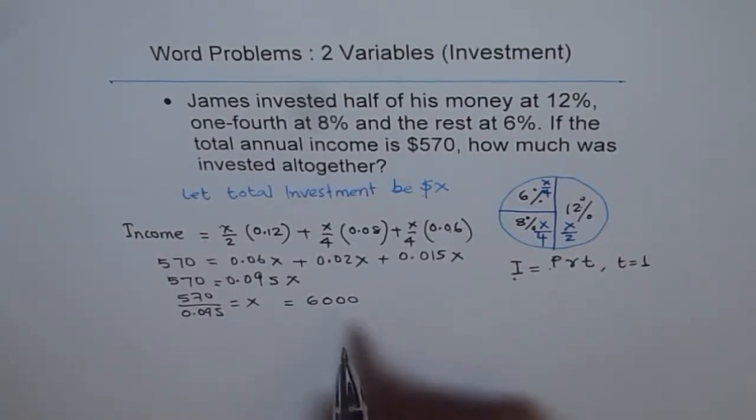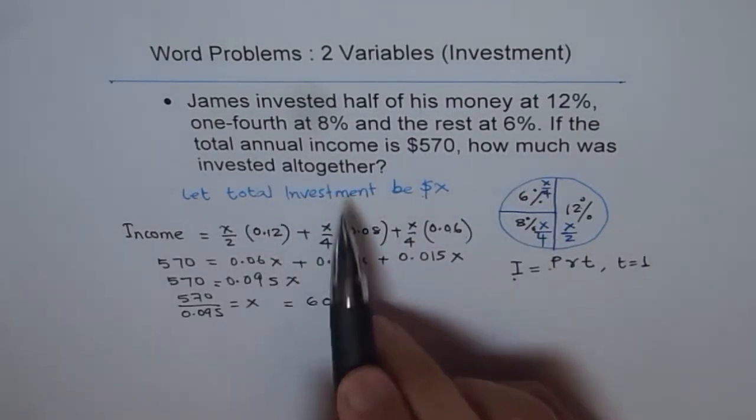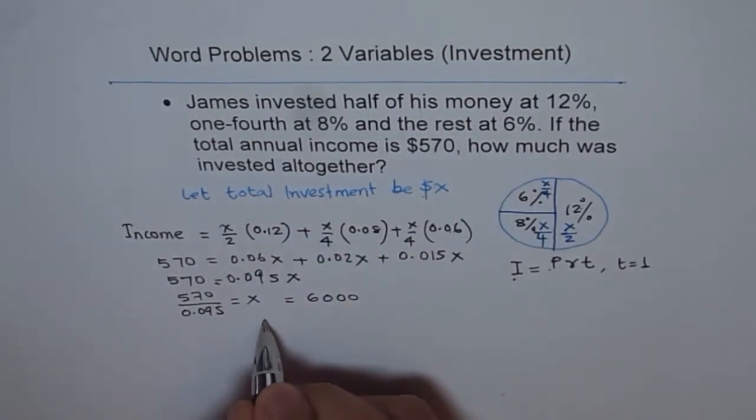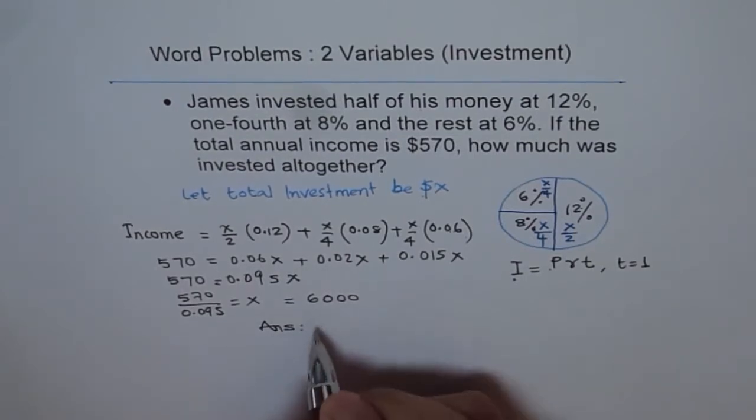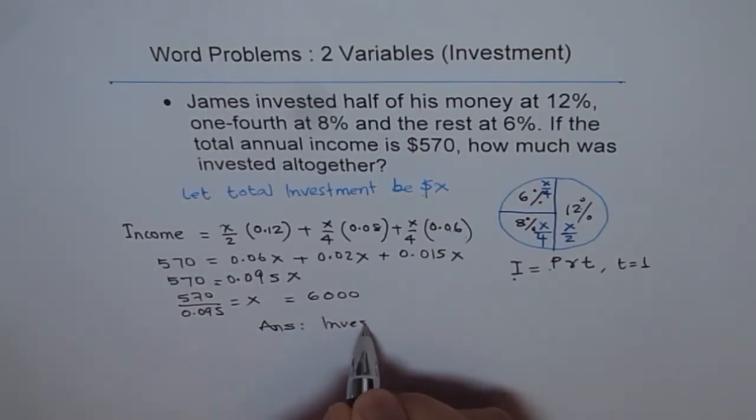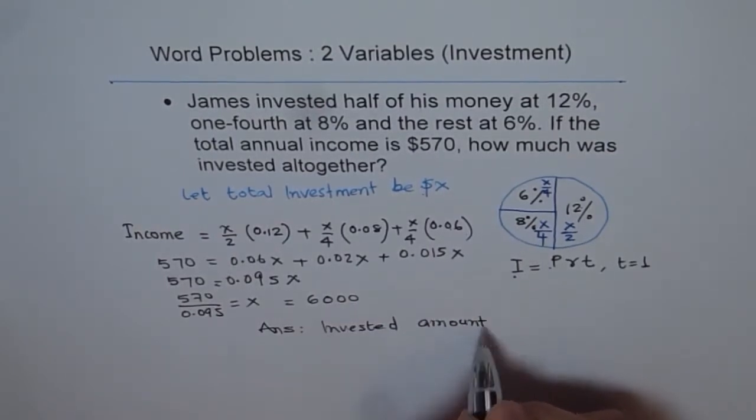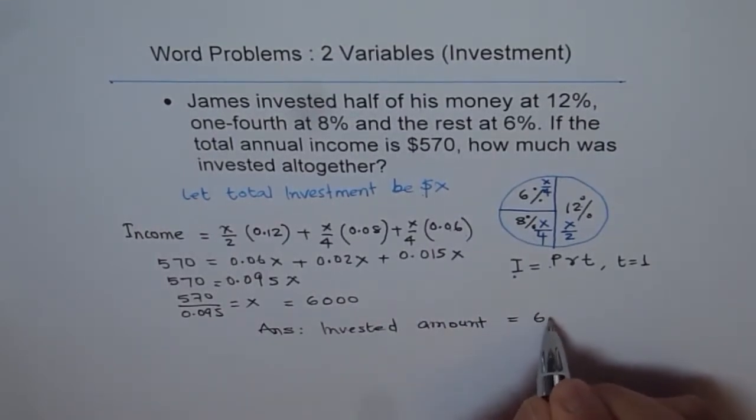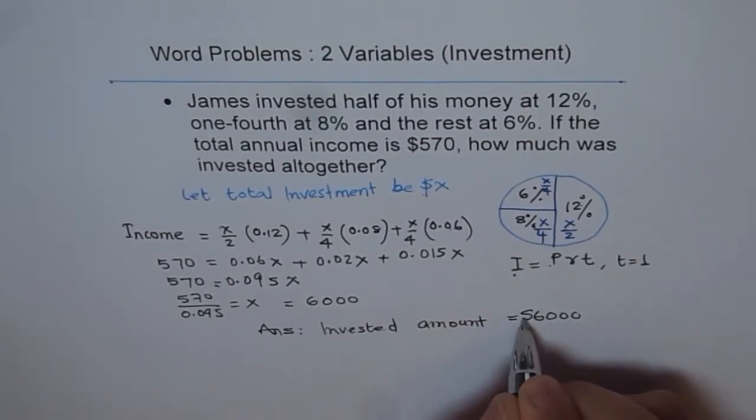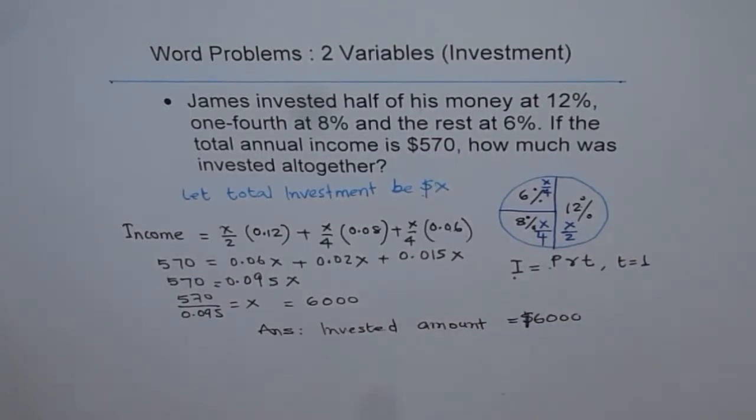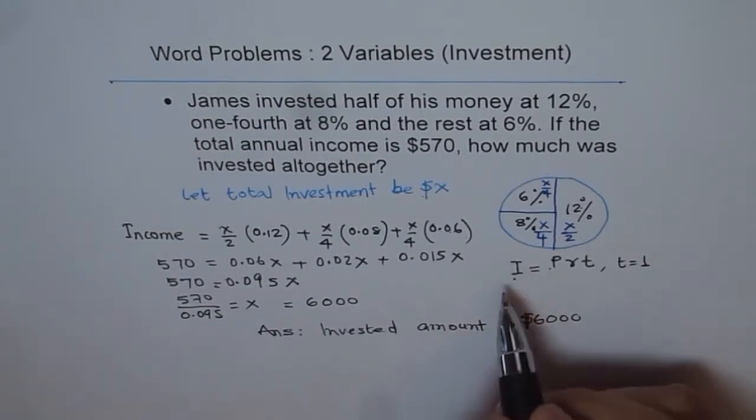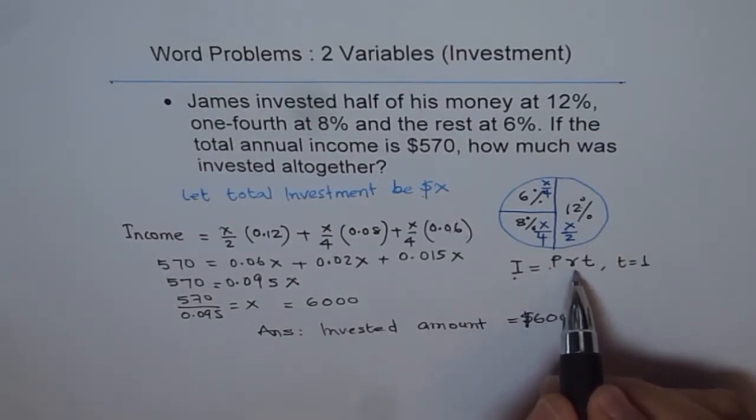So we get this equals $6,000, and therefore we find the total invested amount. The total invested amount was $6,000. That is how you can solve these kinds of problems. Let me get back to this formula once again.